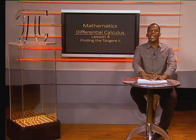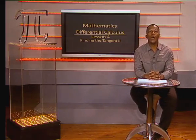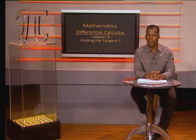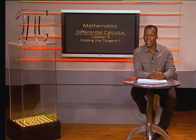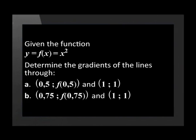Hello Grade 12s. Today we will continue our lesson on how to find the gradient of the tangent to a curve. Let's join Donovan and MacGyver again as they go over the problem they did in the last lesson. Donovan gave MacGyver a task: given the function, determine the gradients of the lines through (½, f(½)) and (1,1), and (0.75, f(0.75)) and (1,1). Let's join them as they use this task to find a method to find the gradient of a tangent.